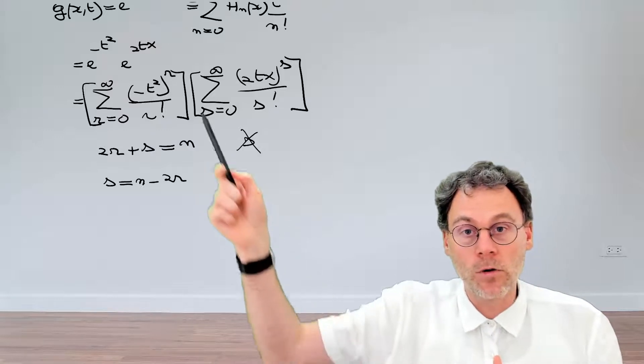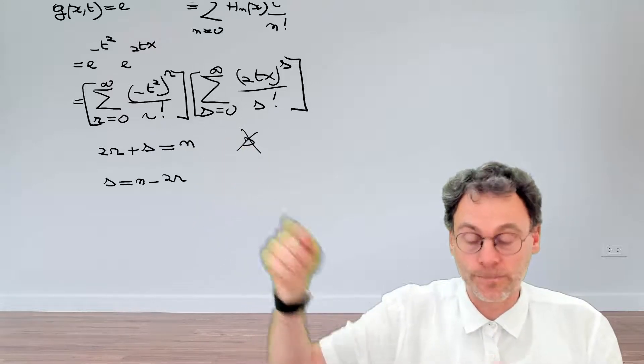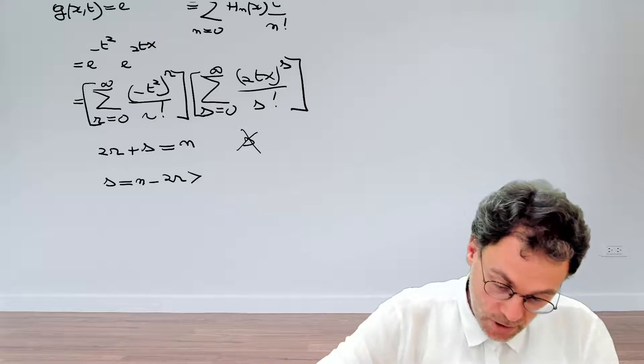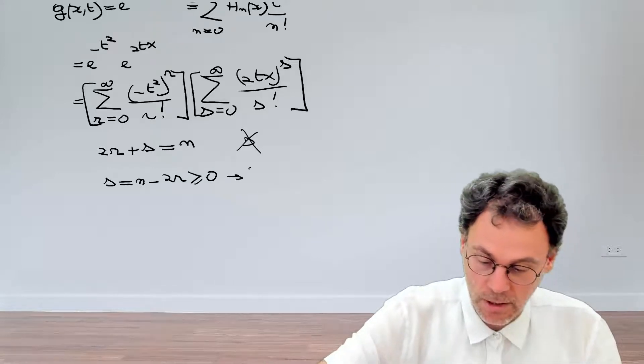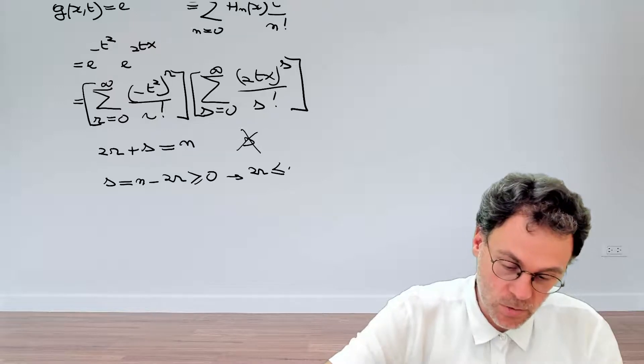And we know that s actually starts at zero. So s has to be a positive number. And from that, we can conclude that 2r should be smaller than n.